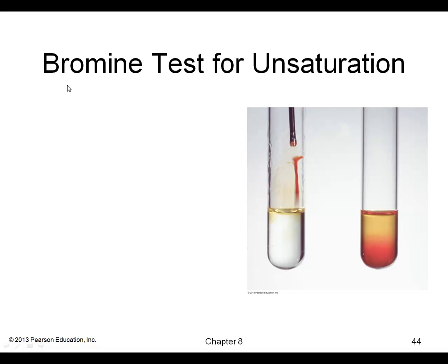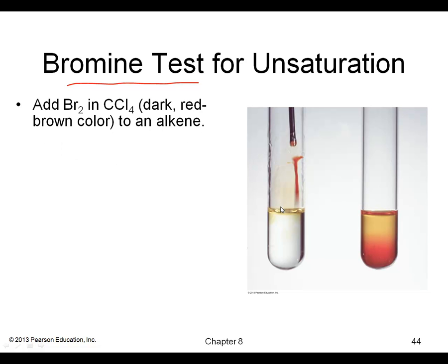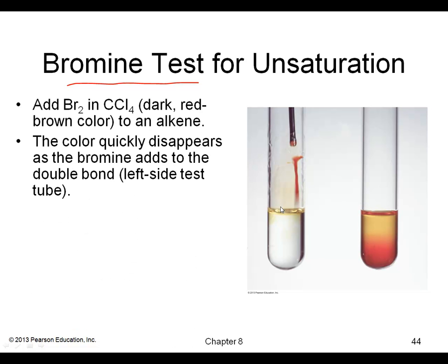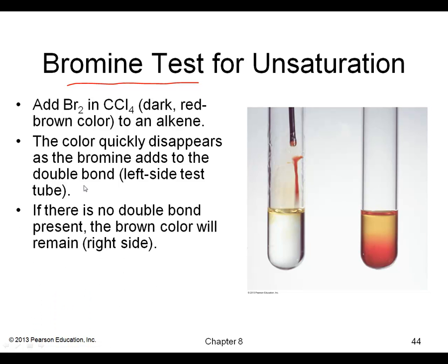Sometimes bromine is used as a test to see if there's a double bond in the molecule. Bromine is red, so if you add it and it stays red, there were no double bonds because there was no reaction. If the red color disappears, that means there was a double bond because a reaction occurred. This is a qualitative test to detect double bonds.